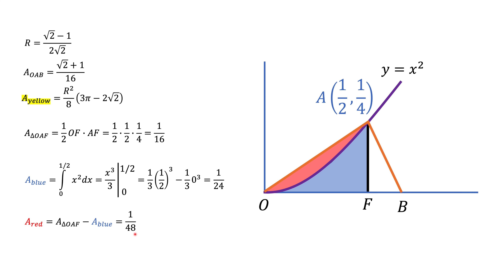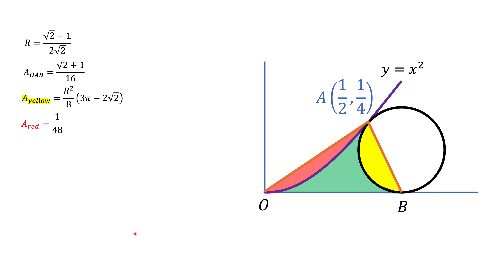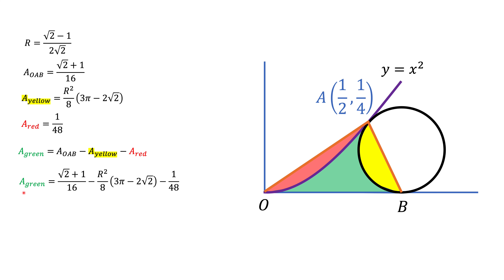Now we're almost done. The green area equals the area of triangle OAB minus the yellow area minus the red area. Plugging everything in gives us the green area, where r squared can be calculated from the equation derived earlier. The only remaining step is to substitute that value and simplify — I'll leave that final simplification for you.